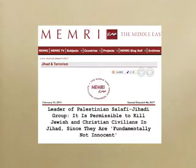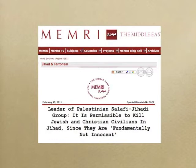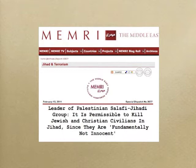You get the point, right? There's nothing ambiguous about his position at all. Is he a radical? Is he an extremist? Is he misconstruing what the Quran says? And lest you believe that his is only an isolated opinion, here's a headline from the Middle East Media Research Institute from February 13, 2011: Leader of the Palestinian Salafi Jihadi group says it is permissible to kill Jewish and Christian civilians in jihad since they are fundamentally not innocent. Where do they get that idea from? Is that just something they concocted out of thin air? Nope. It comes straight out of the pages of the Quran.